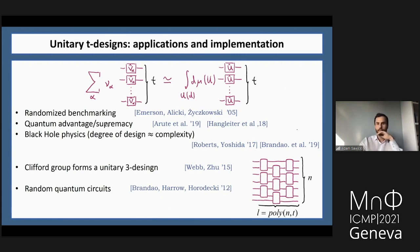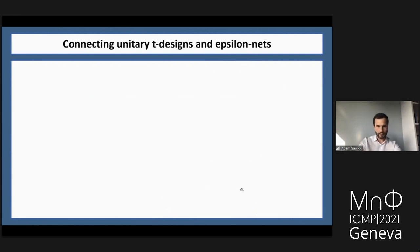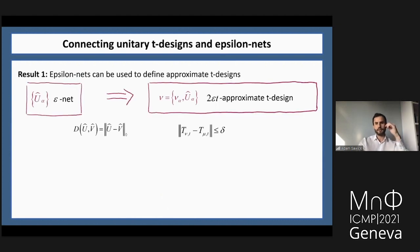How to implement a design? The standard way is through random quantum circuits. To have a T-design, we build a random quantum circuit with depth polynomial in the number of qubits and in the degree of the design. Now here are the main results of this talk.